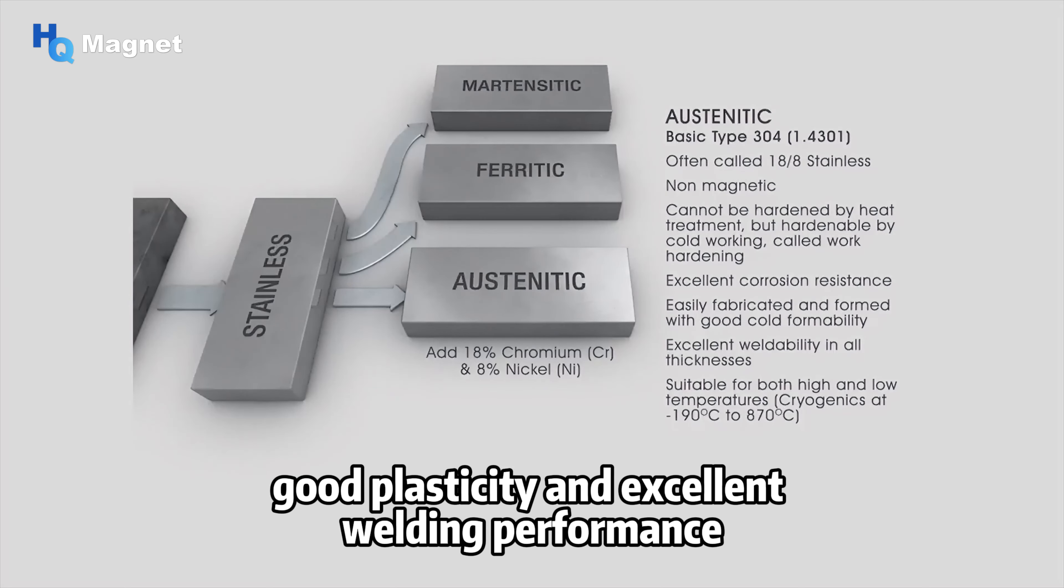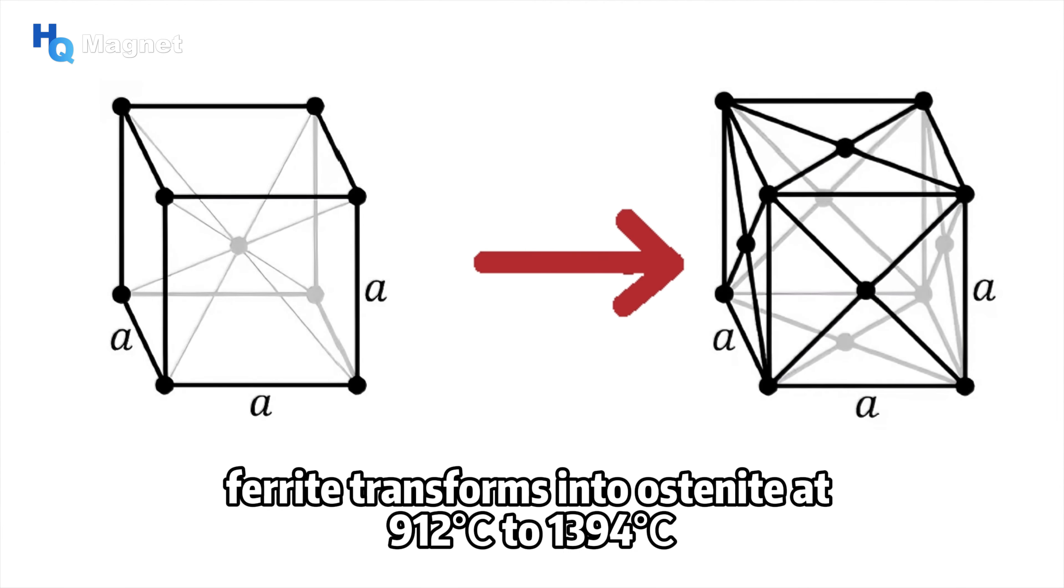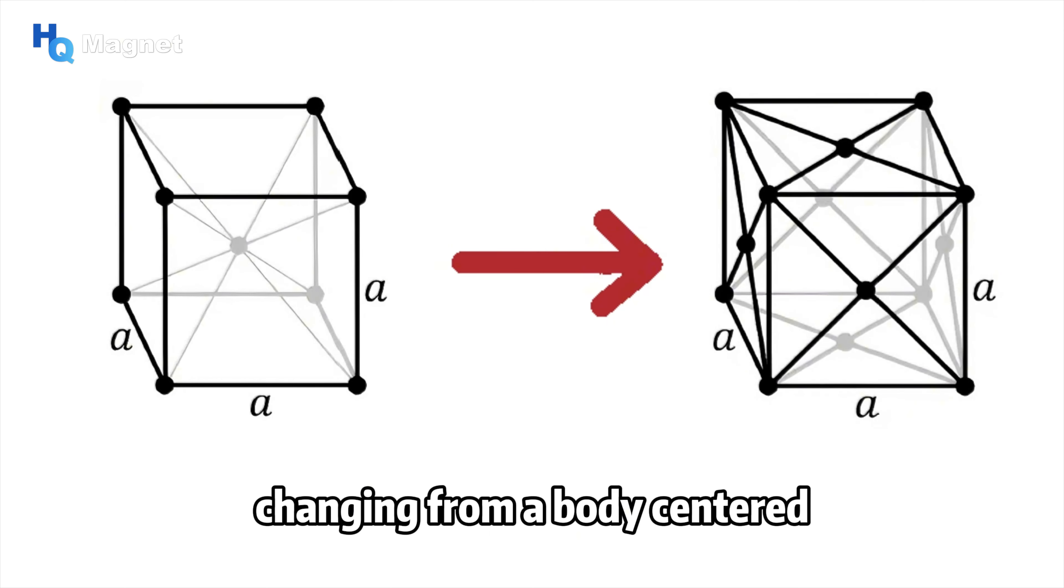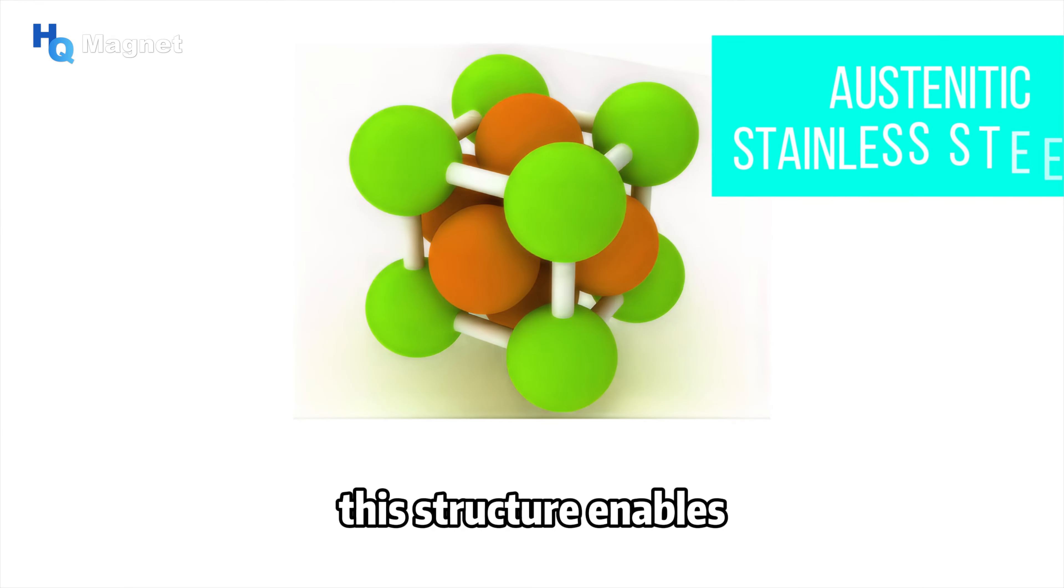Ferrite transforms into austenite at 912 to 1394 degrees Celsius, changing from a body-centered cubic structure to a face-centered cubic structure. This structure enables austenitic stainless steel to exhibit excellent corrosion resistance and mechanical properties.